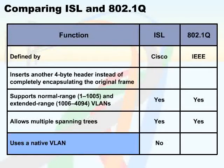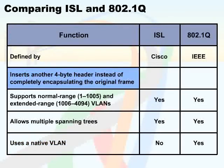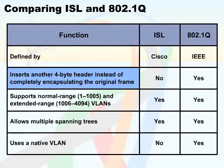Now let's look at the real differences between them. Unlike ISL, 802.1Q defines one VLAN — usually VLAN 1 — on each trunk as the native VLAN. If the sending VLAN is a native VLAN, 802.1Q does not attach any header to the original Ethernet frame. When the receiving side receives an Ethernet frame without any header, it automatically assumes that the frame is from the native VLAN.